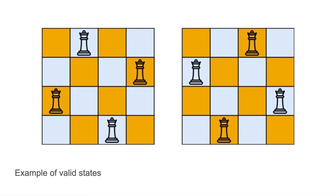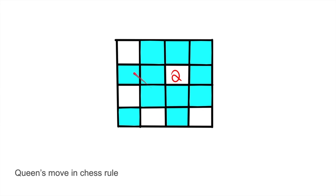If you aren't familiar with the rules of chess, don't worry — the moves of queens are straightforward. A queen can move horizontally, vertically, or diagonally. Therefore, for a placement of N queens to be valid, they can't stand on the same row, the same column, or the two diagonals.